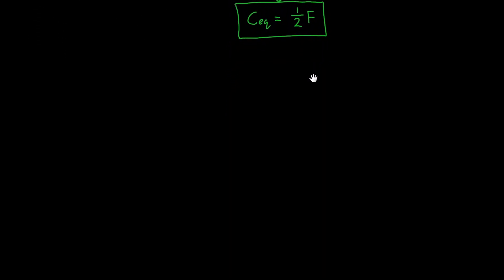But let's say that we have two capacitors that don't have the same value. So let's say we've got a one farad capacitor and a two farad capacitor. How would we do that if we want to figure out the equivalent capacitance?